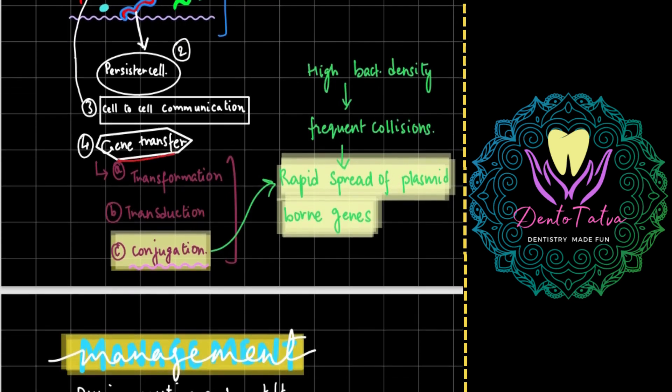The genetic transfer is through transformation, transduction, or conjugation. Out of which conjugation is the most efficient form of genetic transfer wherein there is rapid spread of plasmid-borne genes.